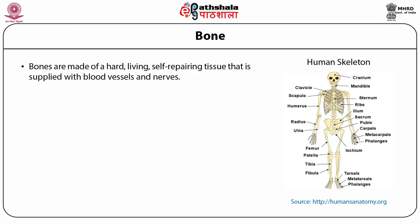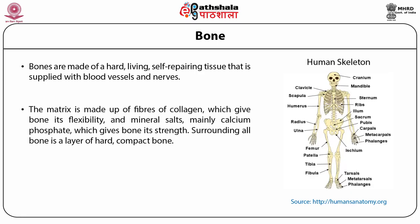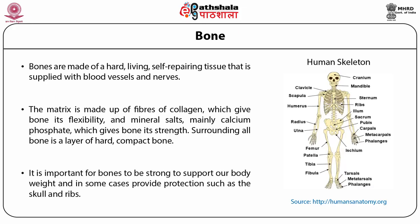Bones are made up of hard, living, self-repairing tissue that is supplied with blood vessels and nerves. Bone consists of widely spaced osteocytes, that is bone cells, and the matrix that lies between them. The matrix is made up of fibers of collagen, which gives bone its flexibility, and mineral salts, mainly calcium phosphate, which gives bone its strength. Surrounding all bone is a layer of hard compact bone. The spaces within spongy bones are frequently filled with red marrow. It is important for bones to be strong to support our body weight and in some cases provide protection, such as the skull and ribs.